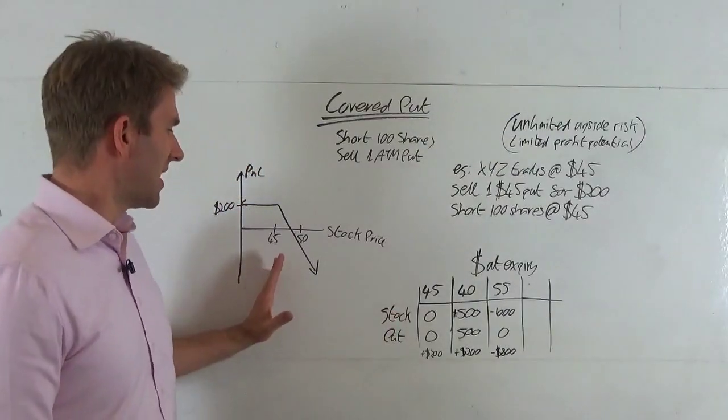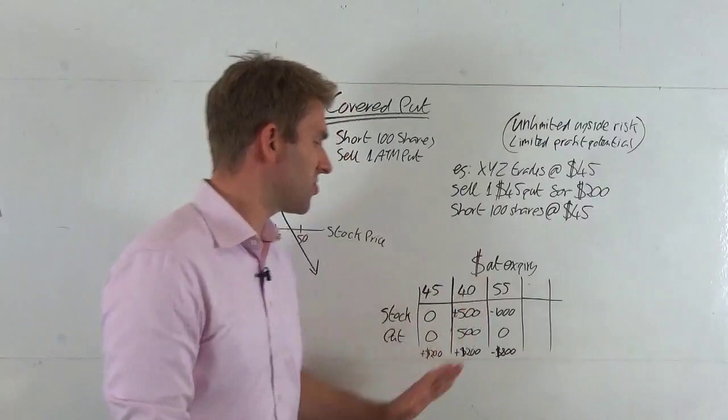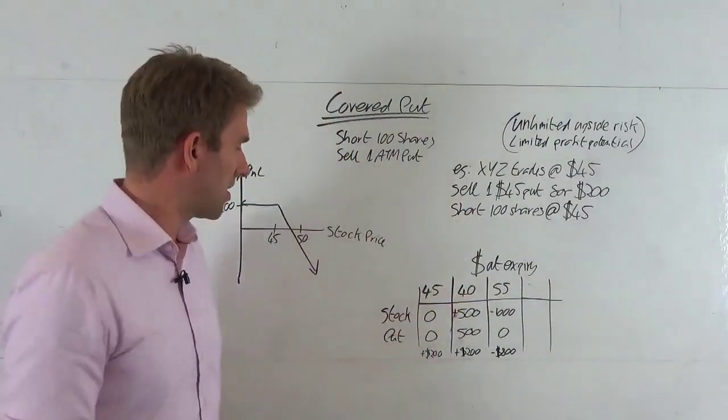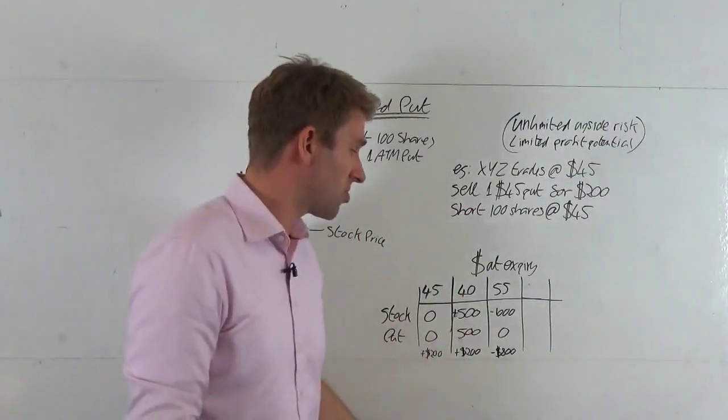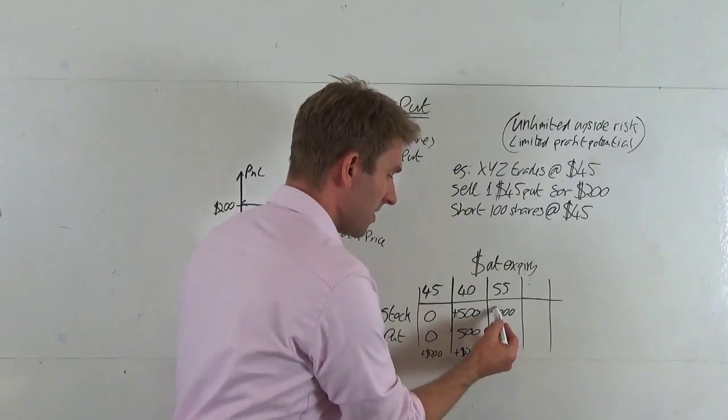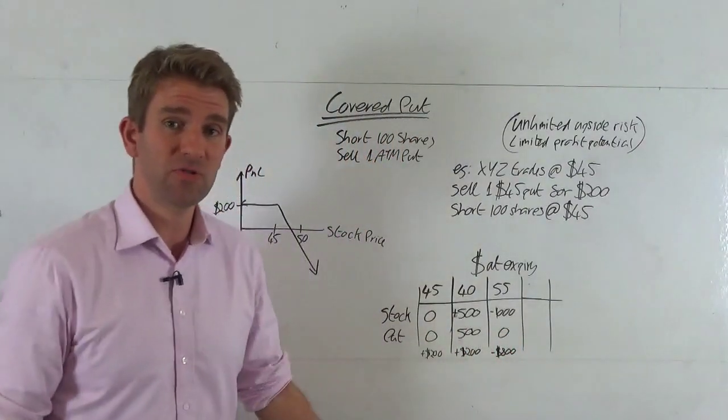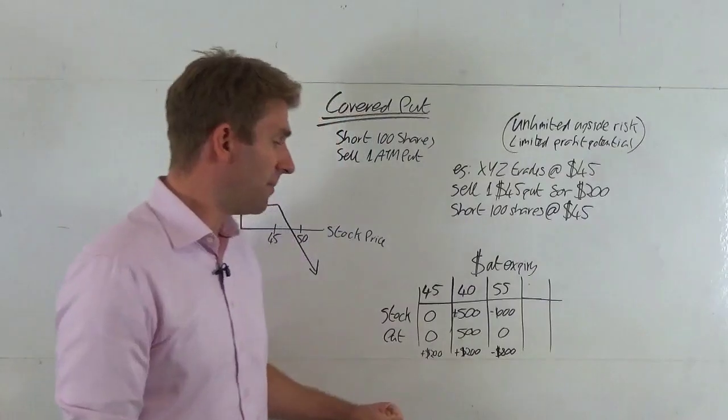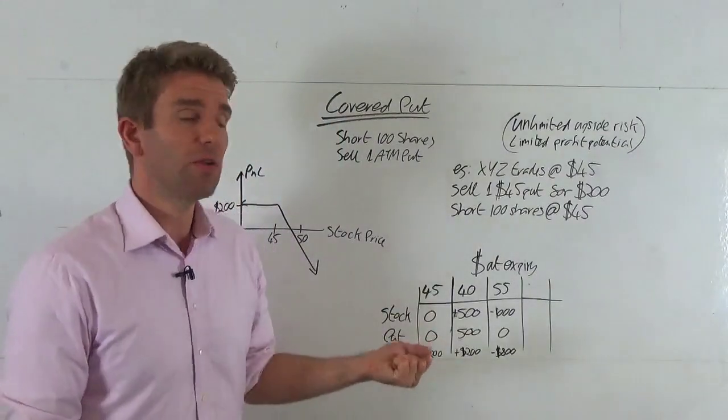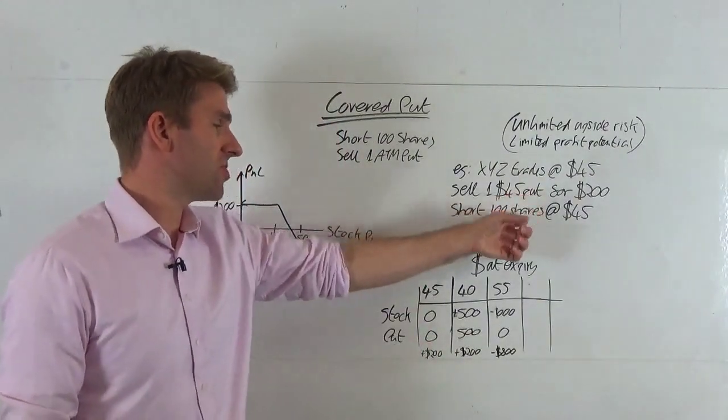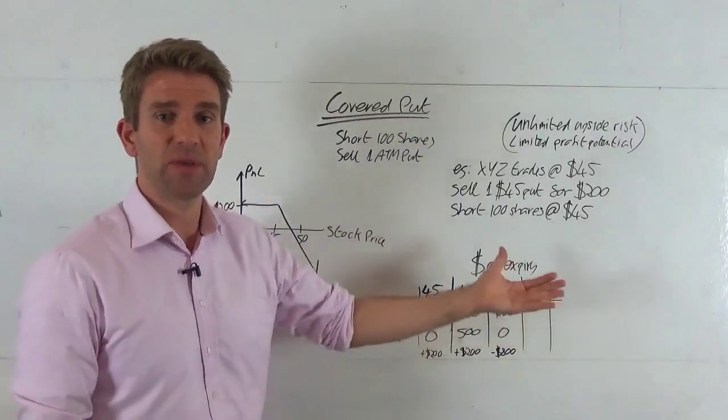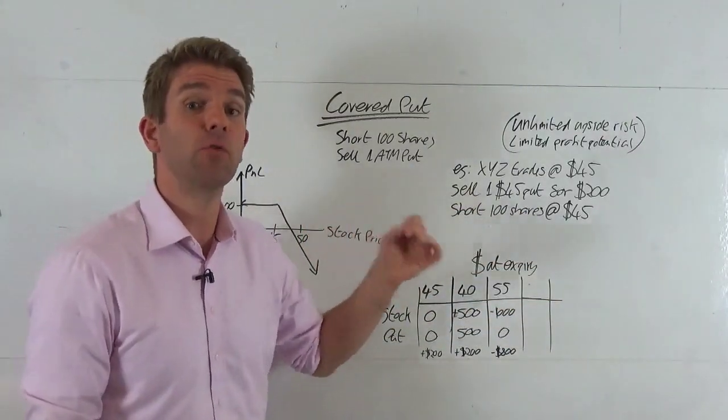But let's look at the other side. Let's look at the stock suddenly starts to rip up, goes to $55. That's no good for our short position. We're down $1,000 on that because it's $10 times 100 shares. Down $1,000.